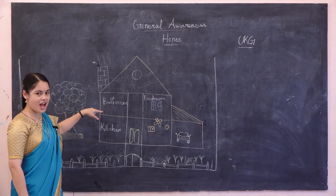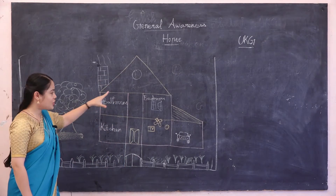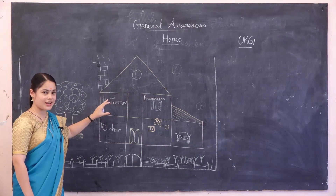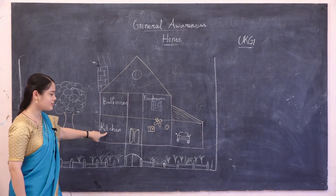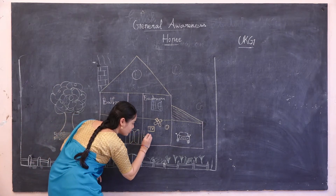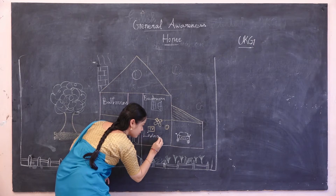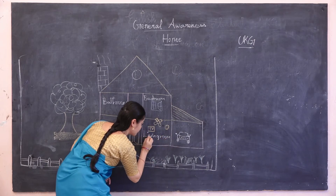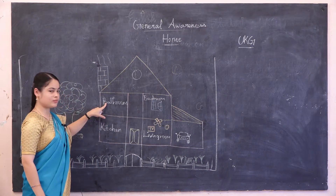Yes, this is a house. There are different rooms in a house. What are they? Kitchen, living room, bedroom and bathroom.